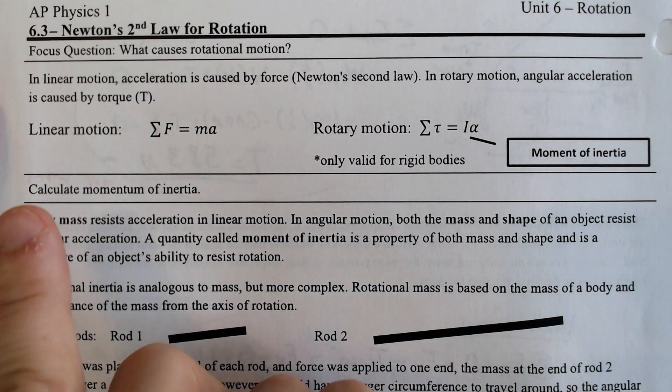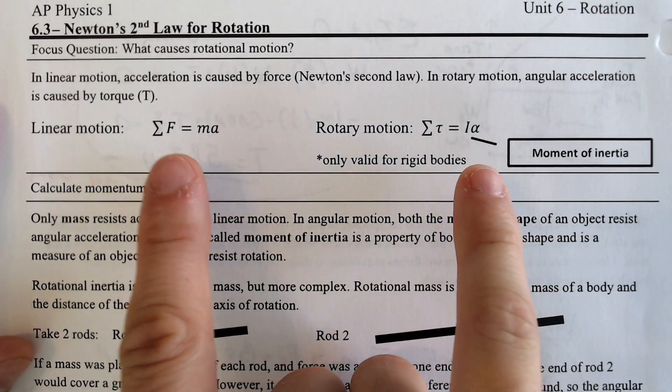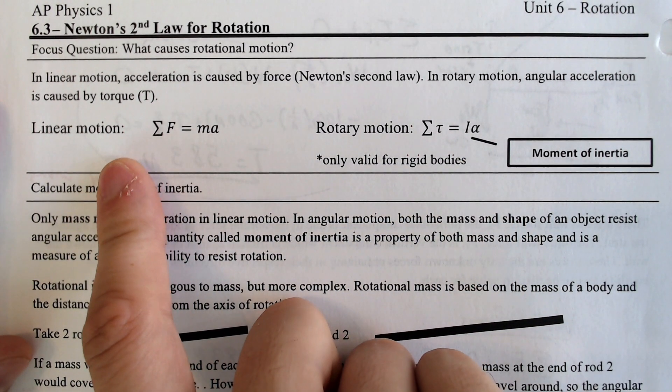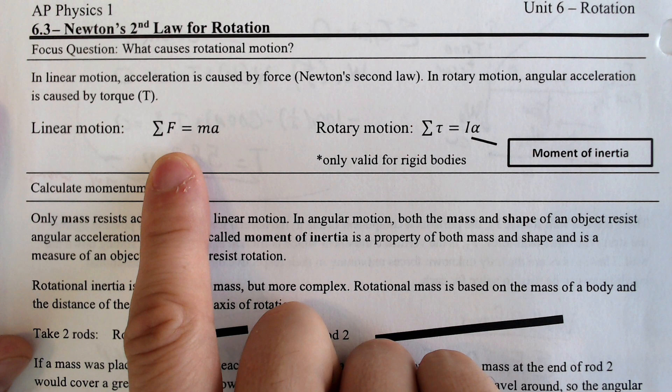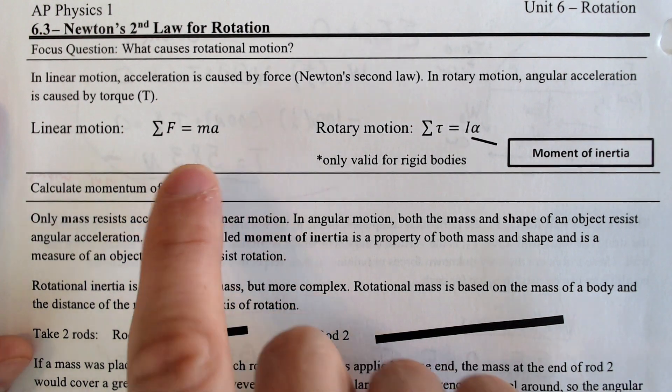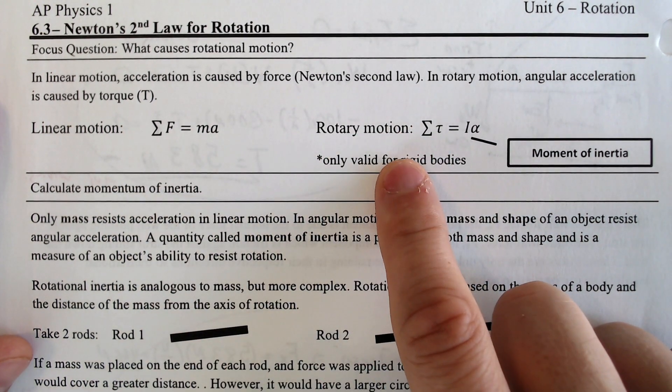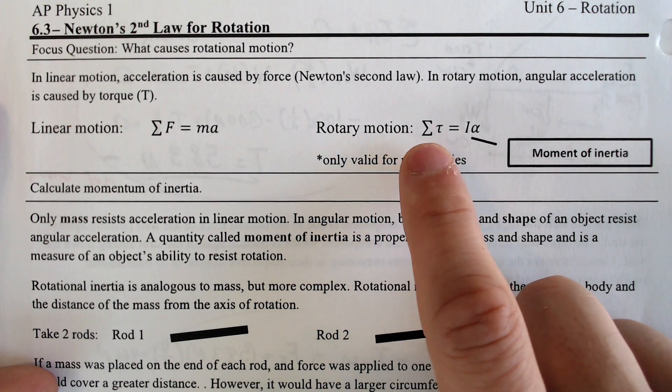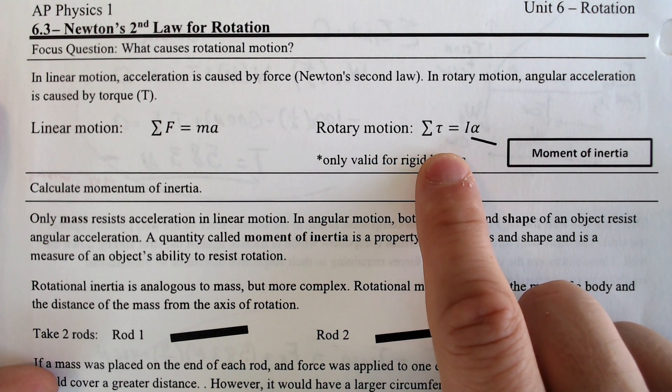I want to draw a big difference between when we talked about Newton's Law with regular linear motion, it was just the sum of all forces equals mass times acceleration. But now when we're talking about rotary motion or rotational motion, it's going to be the sum of all torque, which is the force that is causing the angular acceleration.